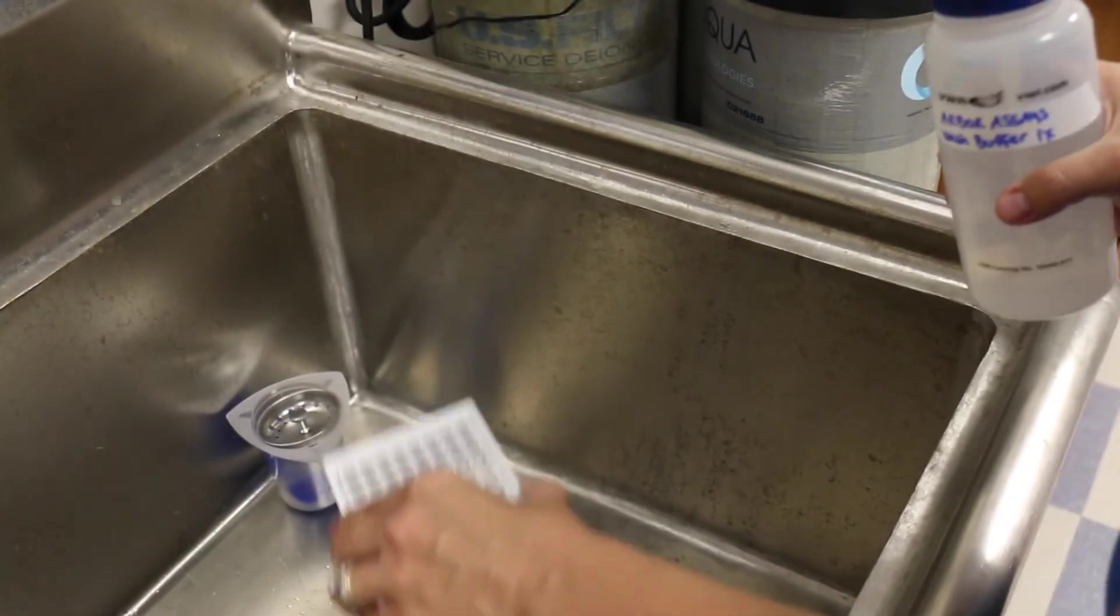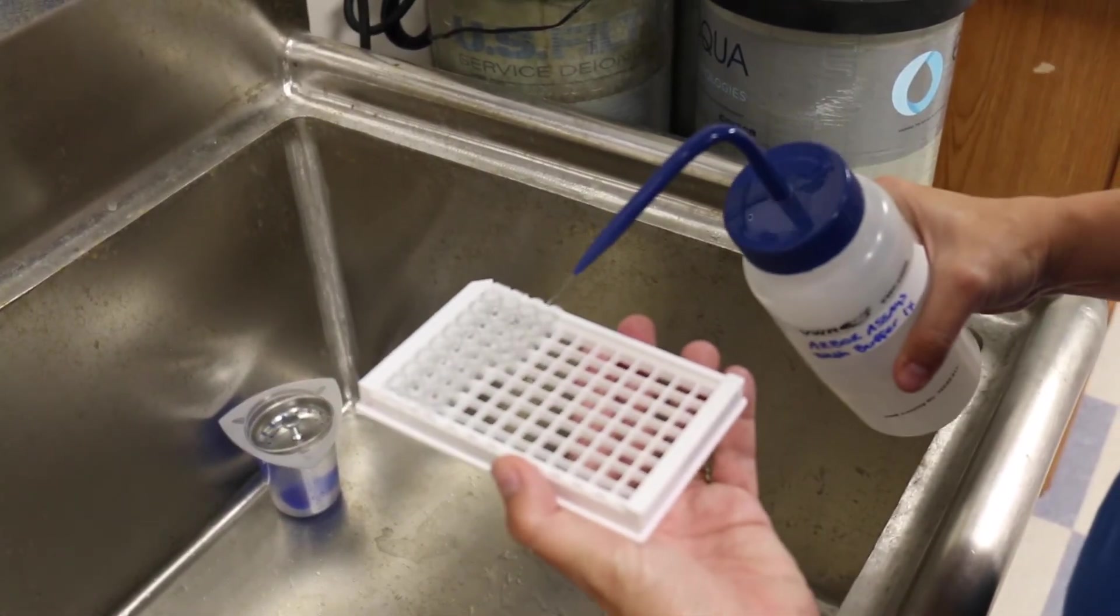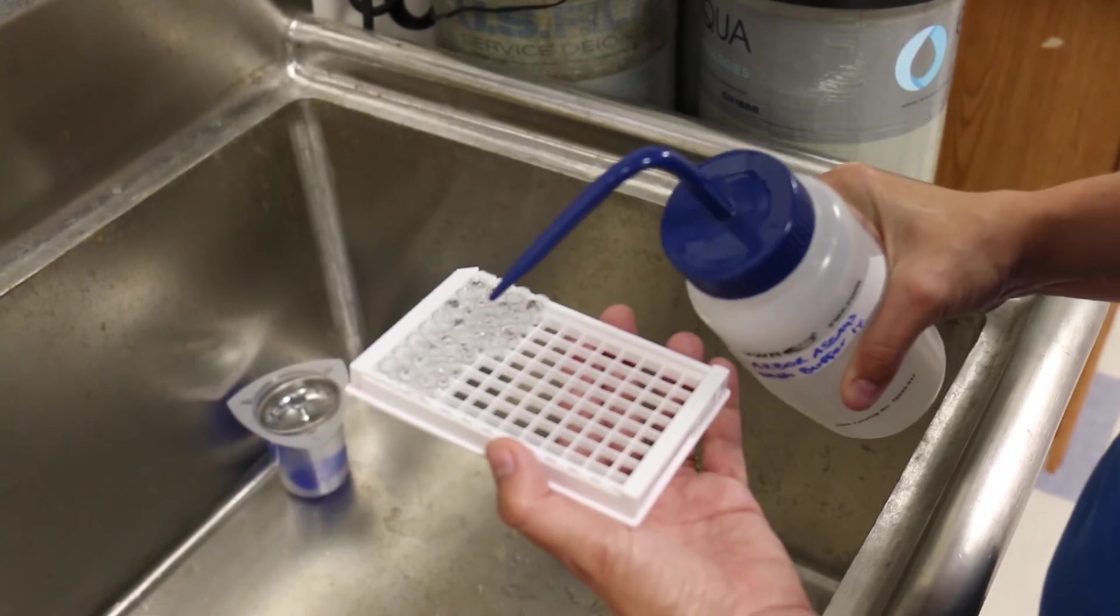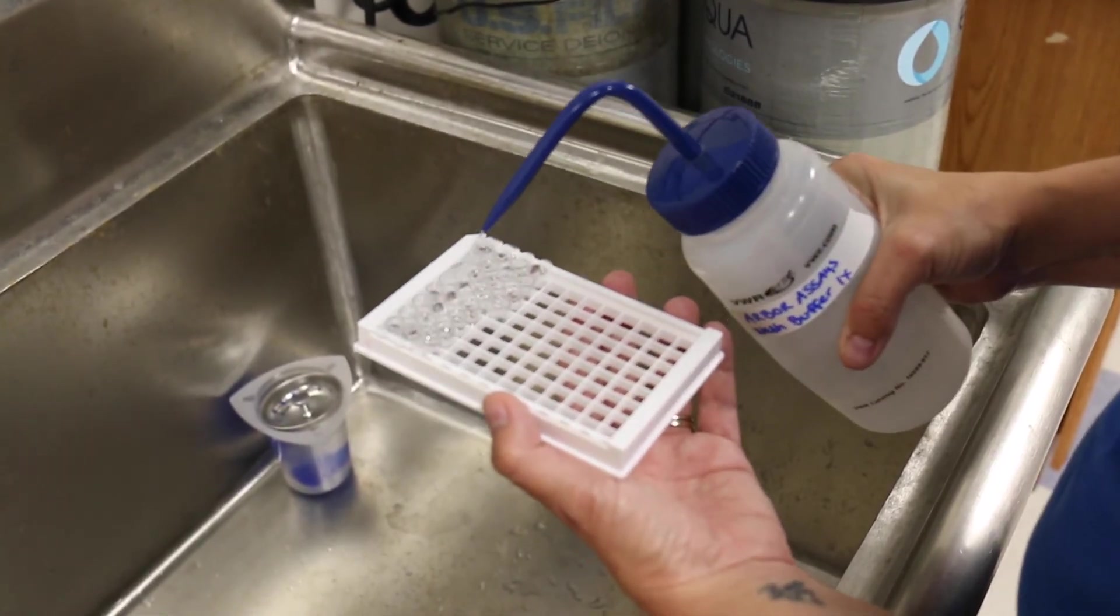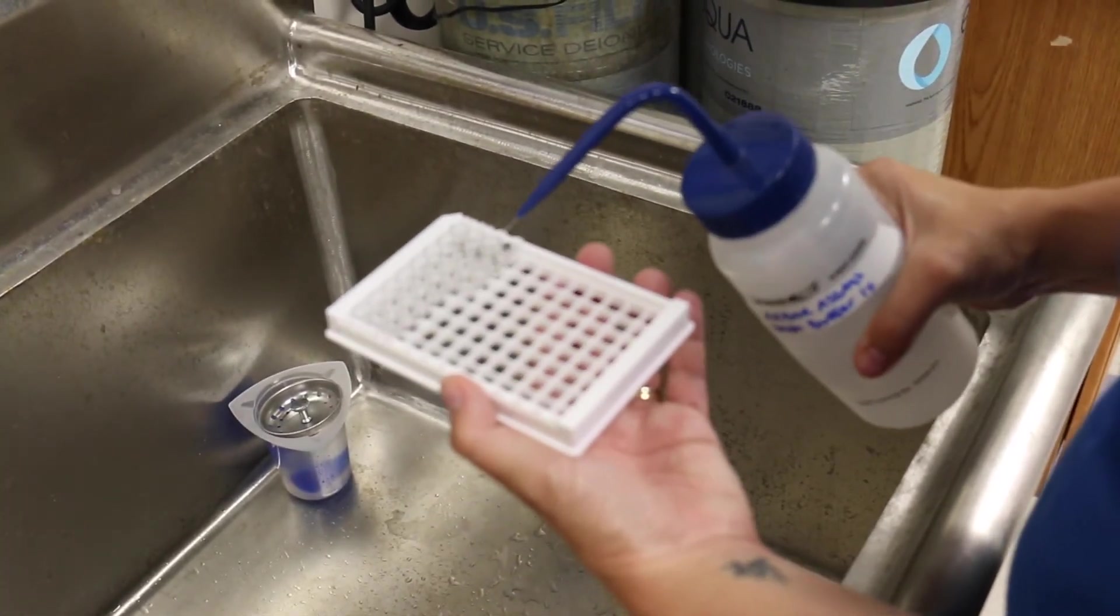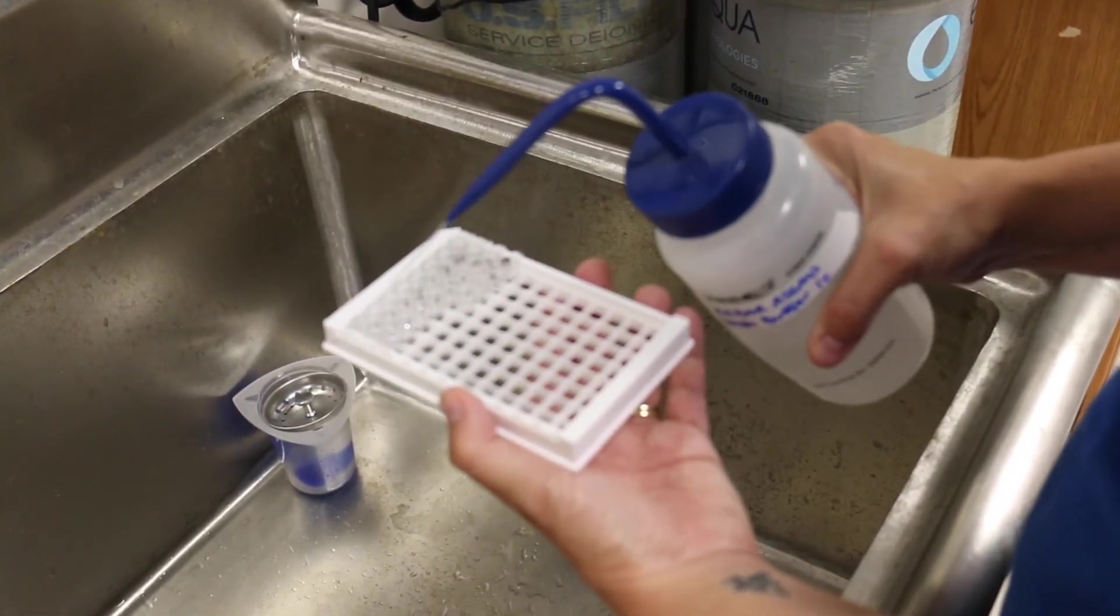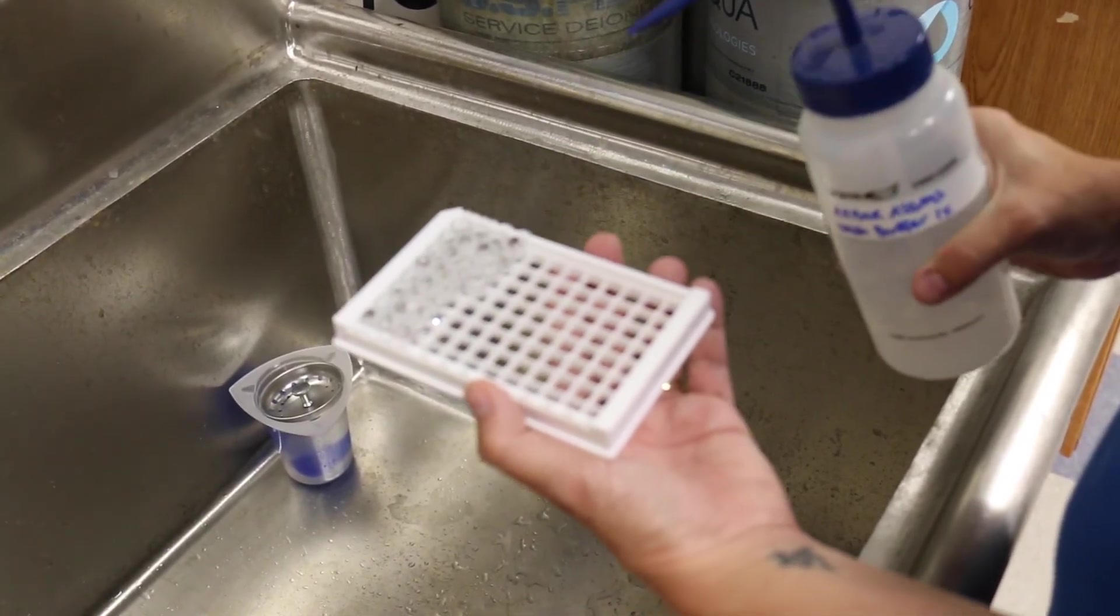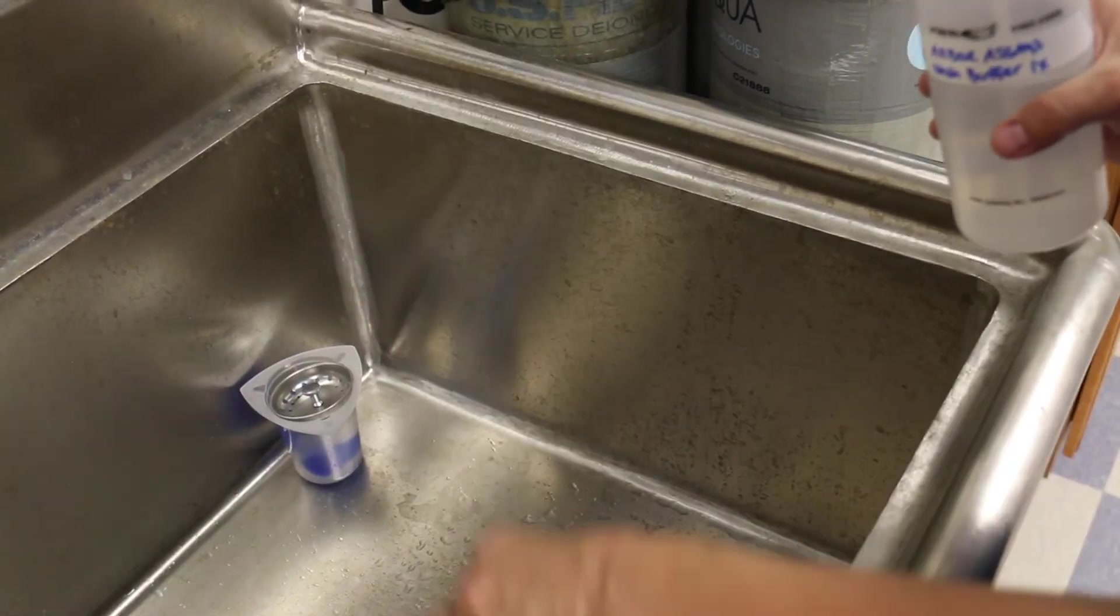If you cannot find a plate washer close by, we suggest that at the end of the incubation time you dump the contents of the wells down the drain. Fill each well with the kit specific wash buffer from a wash bottle. Dump the contents into the sink and repeat four times.